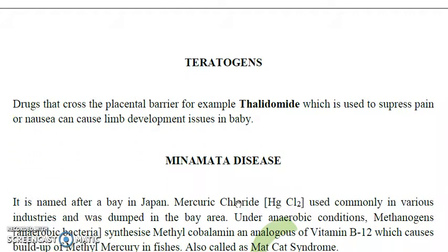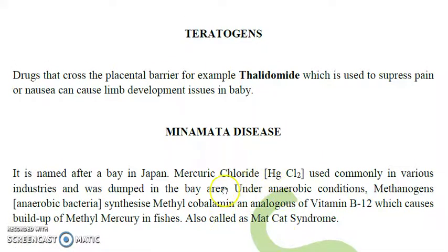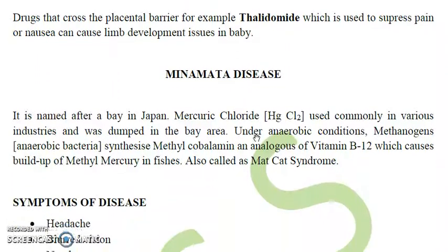Minamata is a bay in Japan where HgCl2 (mercury chloride) was used in various industries and dumped into the bay. Under anaerobic conditions, anaerobic bacteria using methylcobalamin (an analog of vitamin B12) as a cofactor synthesized CH3HgCl — methylmercury chloride — which then concentrated into fish tissue. These fish were eaten by human beings, causing Minamata disease. In step one, methylmercury combines with chloride; in step two, it concentrates in fish tissue; and in step three, fish are eaten by humans.